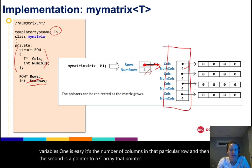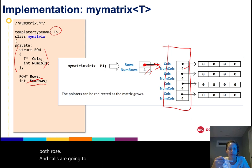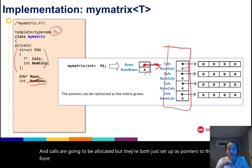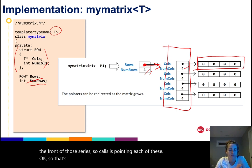The second is a pointer to a C array. That pointer is templated because the matrix can hold any type, and it's called cols. Somewhere in a constructor both rows and cols are going to be allocated, but they're both just set up as pointers to the front of each of those C arrays. So cols is pointing to each of these.